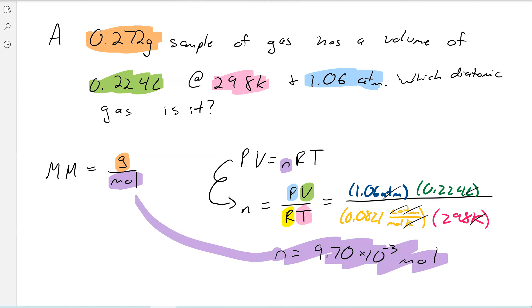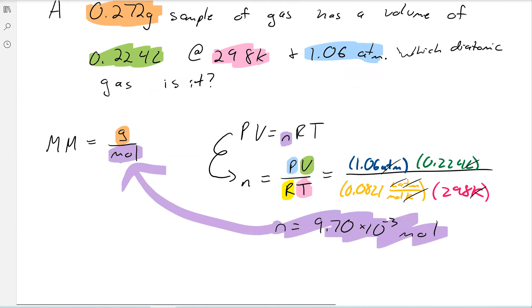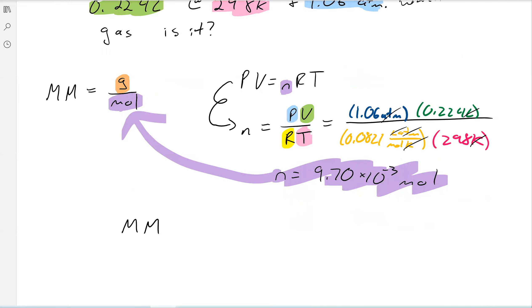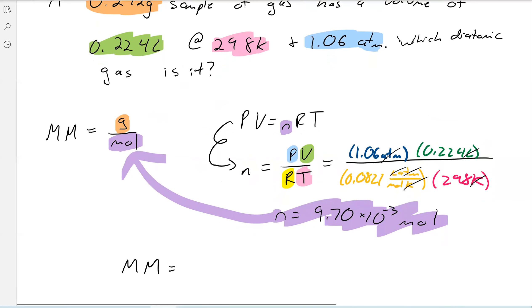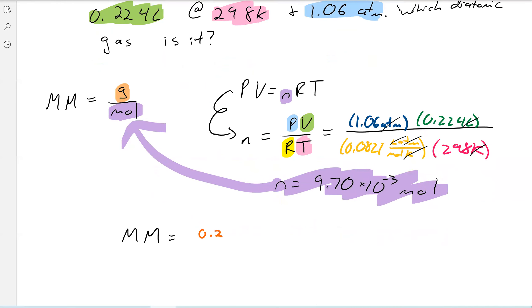And so we can then take these moles, plug it right in there. So our molar mass will be equal to the mass, right, which was 0.272 grams, divide that by the moles, which is 9.70 times 10 to the negative 3 moles. And then we'll get 28.0 grams per mole.